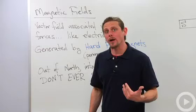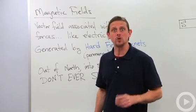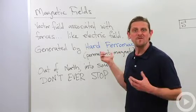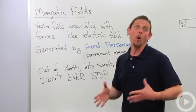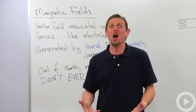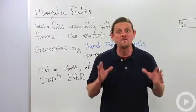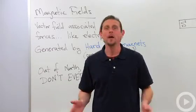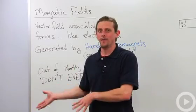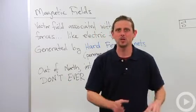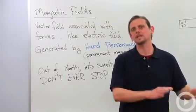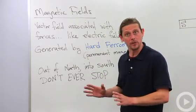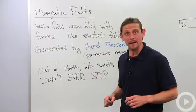Magnetic fields are generated by permanent magnets, which are also called hard ferromagnetic materials. The word 'ferro' is similar to 'ferus,' which is associated with iron. So ferromagnets are associated with iron, even though iron itself is not a hard ferromagnet — you can't make a magnet just out of iron, at least not at ordinary temperatures. But there are other hard ferromagnetic materials that do generate magnetic fields.